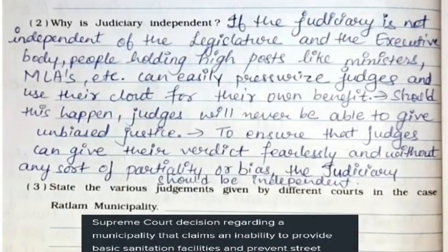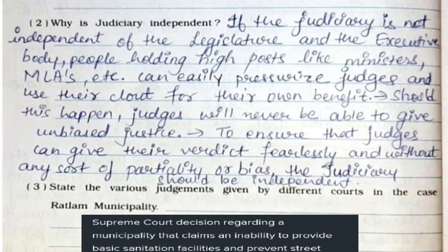Second: why is the judiciary independent? If the judiciary is not independent of the legislature and the executive body, people holding high posts like ministers, MLAs, etc. can easily pressurize judges and use their clout for their own benefit. Should this happen, judges will never be able to give unbiased justice. To ensure that judges can give their verdict fearlessly and without any partiality or bias, the judiciary should be independent.